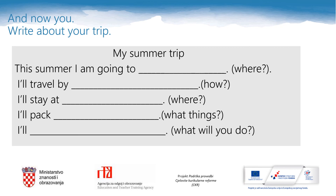And now you write about your trip. Vaš je zadatak napisati mali sastav o vašem ljetnom putovanju: My Summer Trip. These sentences can help you: This summer I am going to... (the mountains, a big city, the seaside). I'll travel by... I'll stay at... I'll pack... I'll... (activity). We covered all of this in the lesson, so go back for ideas. Good luck!